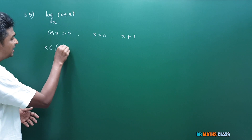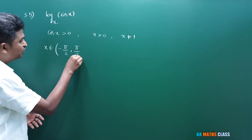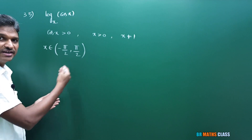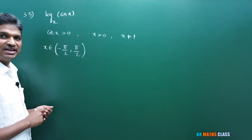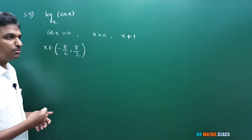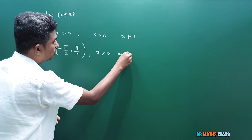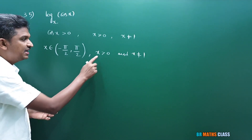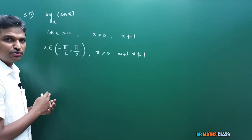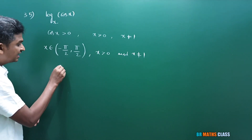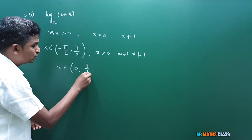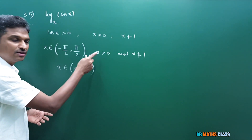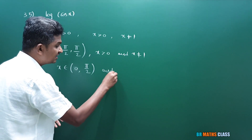When cos x is greater than 0, x belongs to the open interval (−π/2, π/2). The interval 0 to π/2 is the first quadrant, and −π/2 to 0 is the fourth quadrant in the anti-clockwise direction. Now we also have x greater than 0 and x not equal to 1. Taking the intersection of cos x > 0 and x > 0, we get x belongs to the open interval (0, π/2), and additionally x cannot be equal to 1.